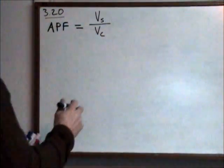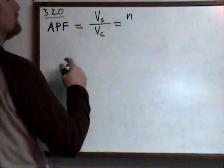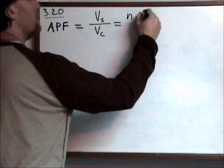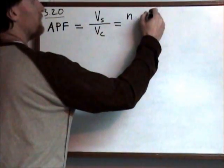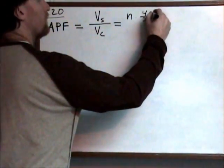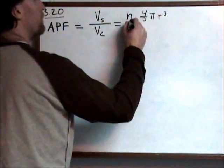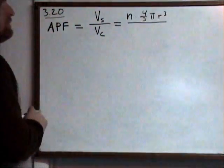In this case, the volume of the spheres is equal to the number of spheres times the volume of a single sphere, which is 4/3 π times the radius cubed. So we'll do everything with respect to the radius cubed.